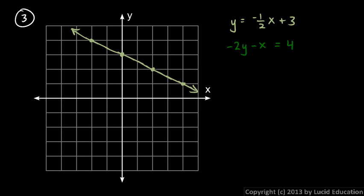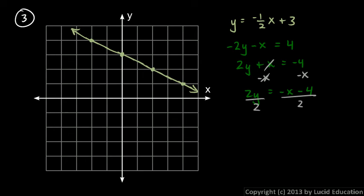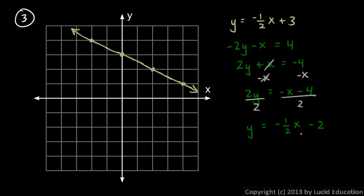I'm going to start by multiplying both sides by negative one. That will give me positive two y plus x equals negative four. Then subtract x from each side, and that will give me two y equals negative x minus four. Then divide both sides by two, and that gives me y equals negative one-half x minus two. So this is that equation just rearranged algebraically, and now it's in slope-intercept form. So let's graph it with a y-intercept of negative two and a slope of negative one-half — down one over two. Same slope.